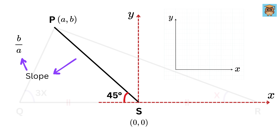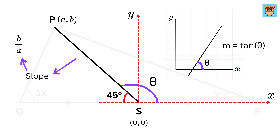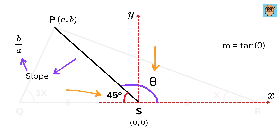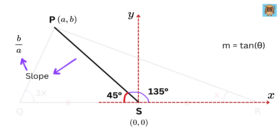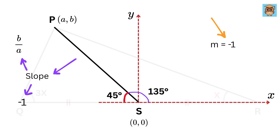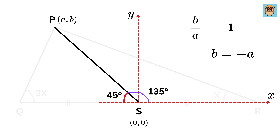Also, if I draw a line making some angle theta from the positive X-axis, then the slope of that line is given as tan of theta. What is the value of theta for line PS? If this angle is 45 degrees, this angle will be equal to 180 minus 45, or 135 degrees. Hence, the slope of line PS will be tan of 135 degrees. But tan of 135 degrees equals minus 1, and hence the slope of line PS equals minus 1. So, B over A equals minus 1, and hence B equals minus A.